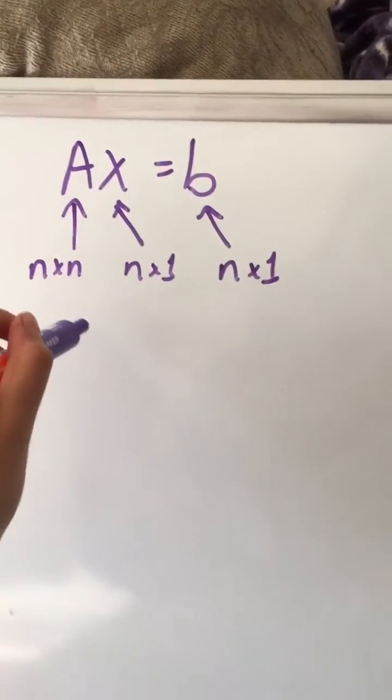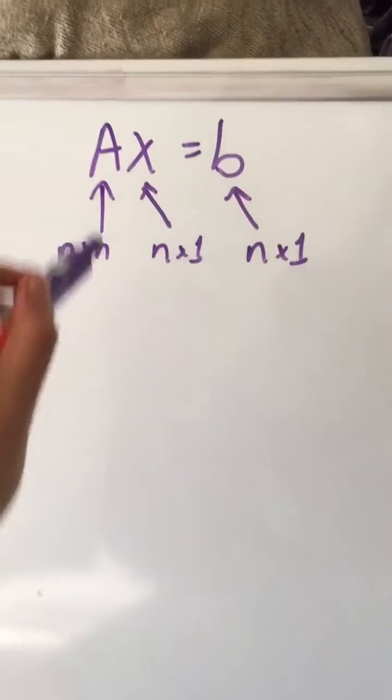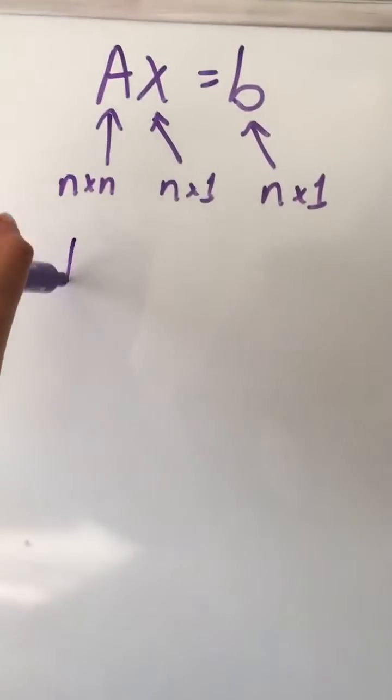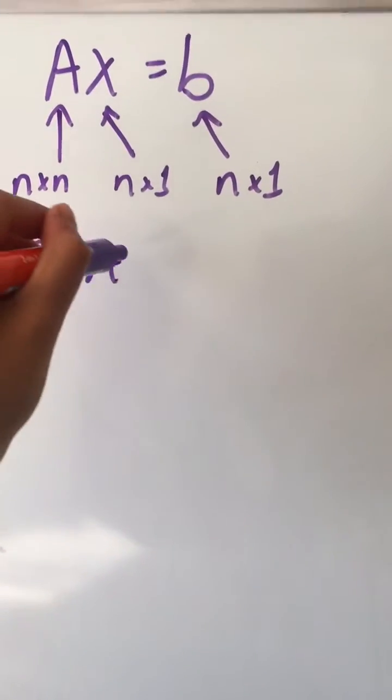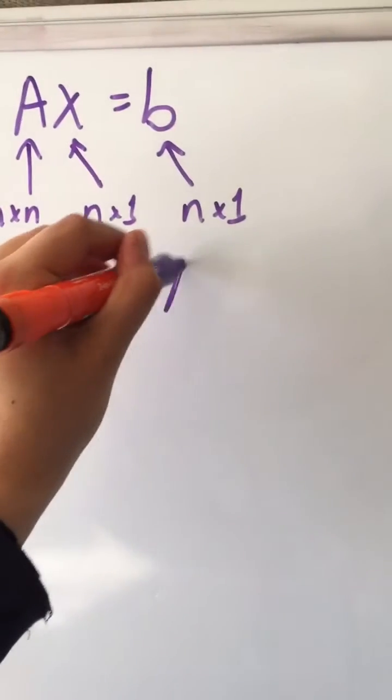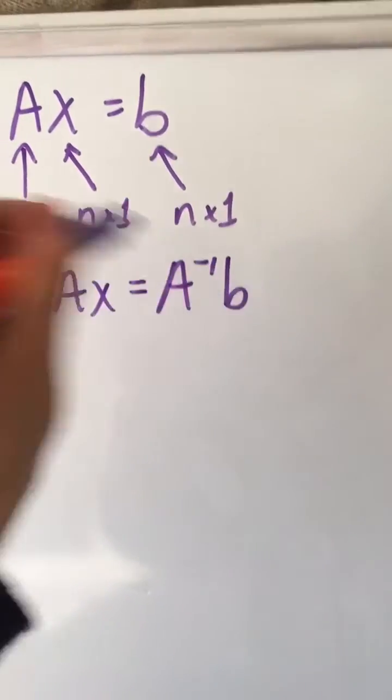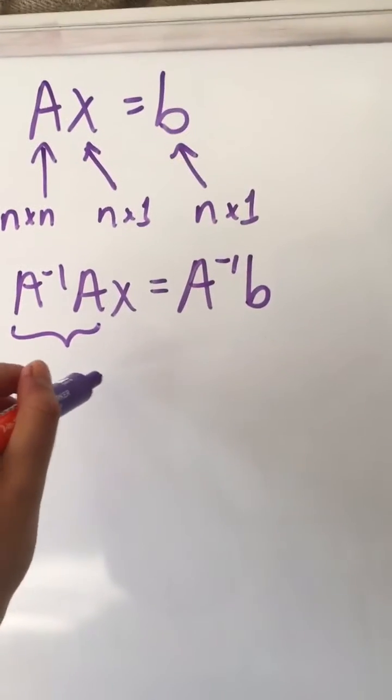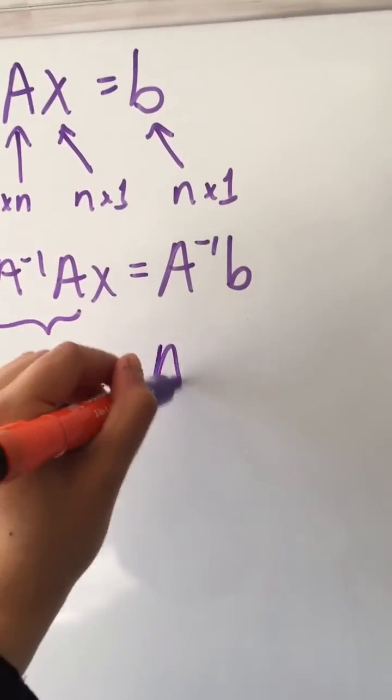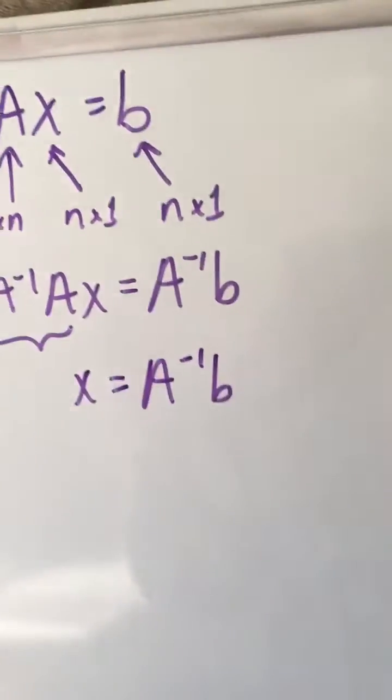So in order to isolate X we left-hand multiply by A inverse, which causes cancellation on the left-hand side, and X equals A inverse B.